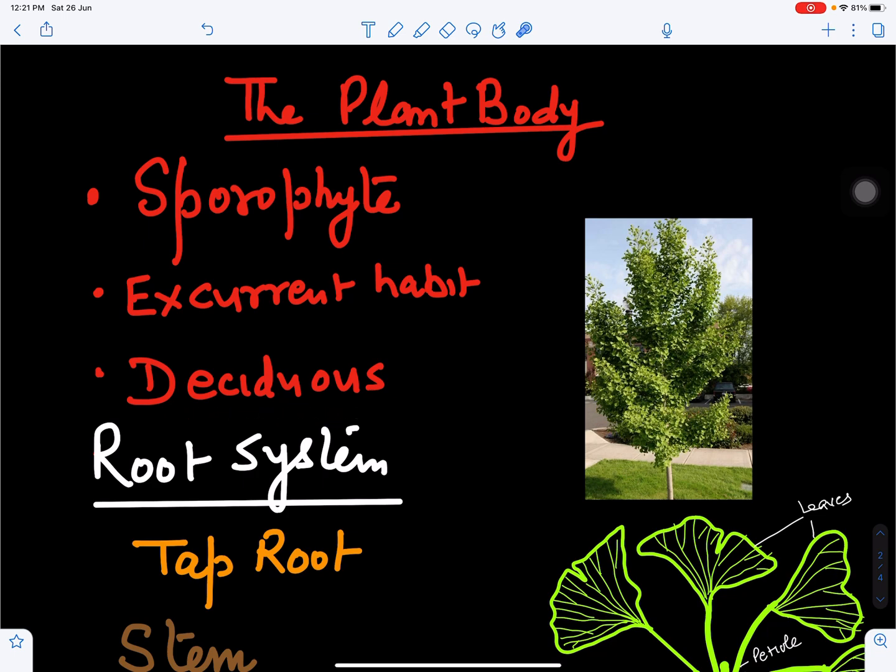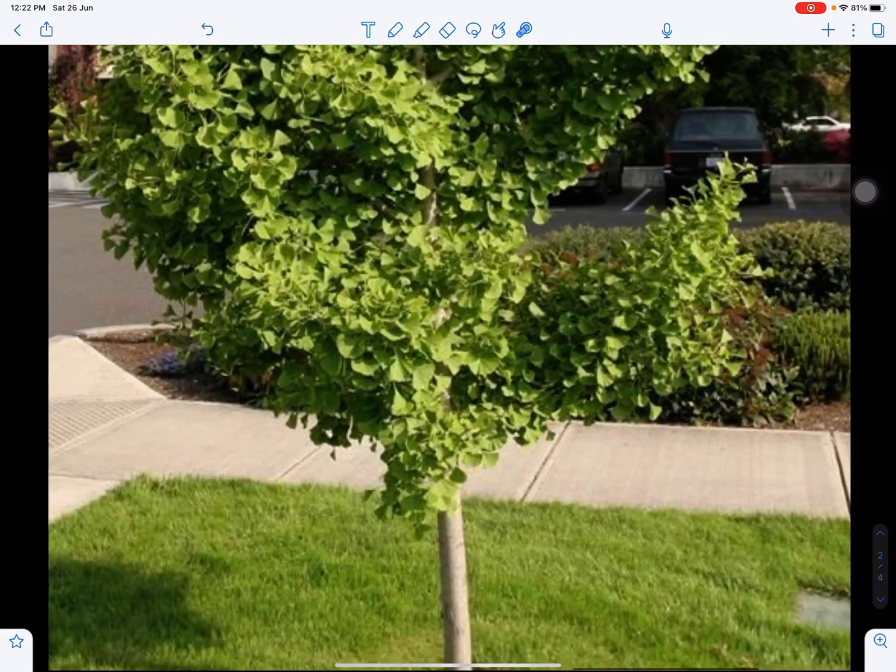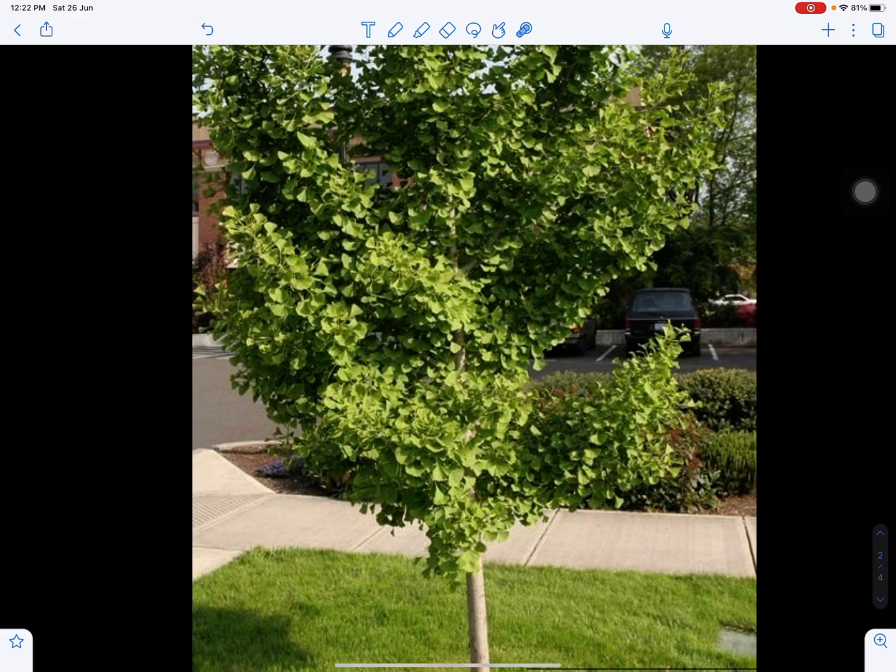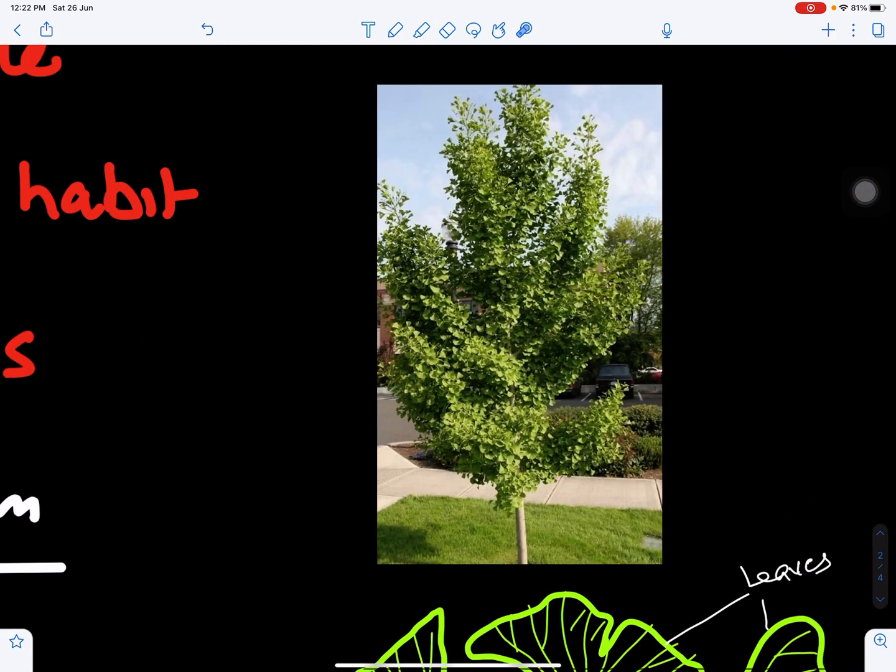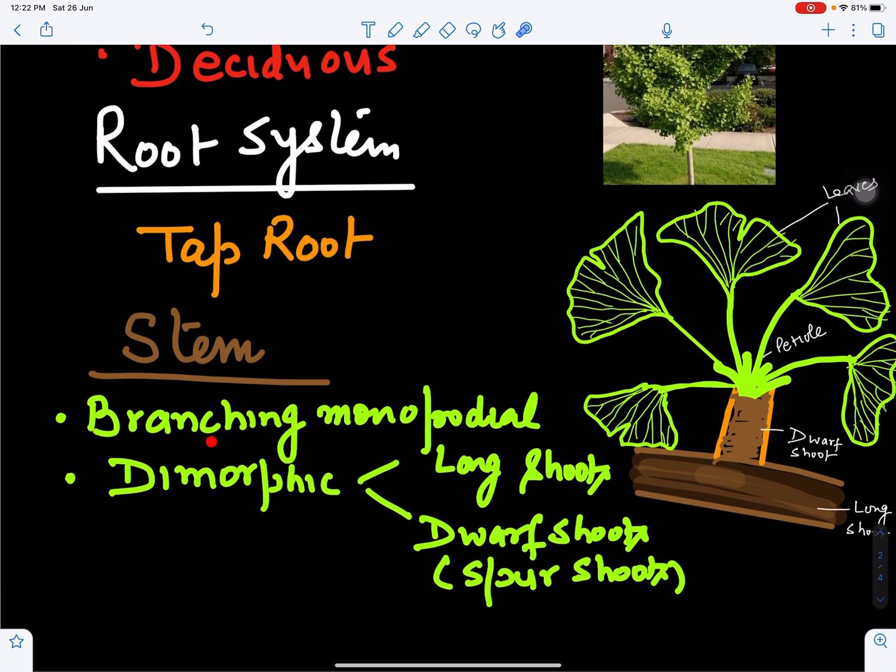This is the tree of Ginkgo biloba with stem that grows straight showing monopodial growth and branches bearing the leaves. Its root system is tap root system and is deep, helping in attachment of the stem to the soil.